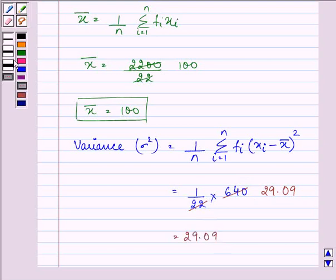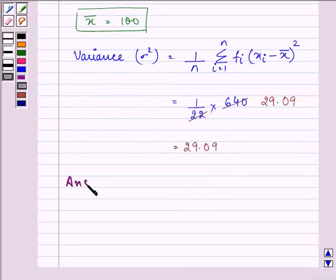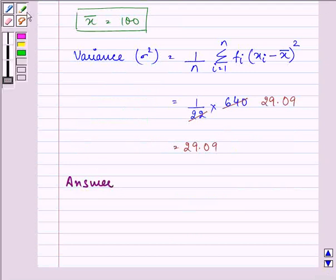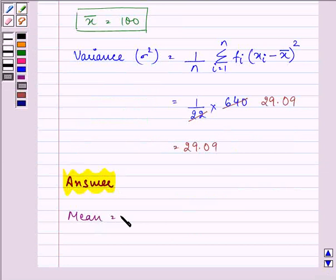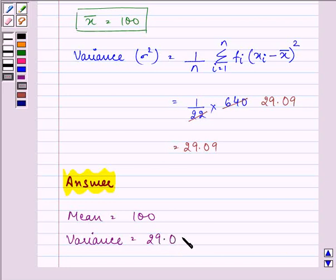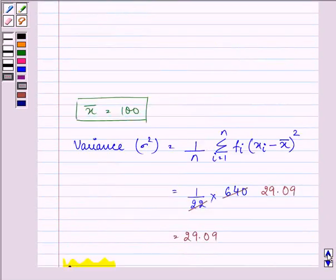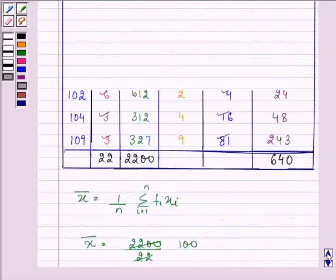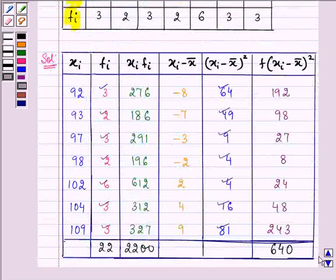So we can summarize the answer and we can write that we found out mean is equal to 100 and variance is equal to 29.09. Alright, so this ends my session. Hope you understood the whole concept well. Do make your table very neat and clear so as to avoid any calculation error. So have a nice day. Bye for now.